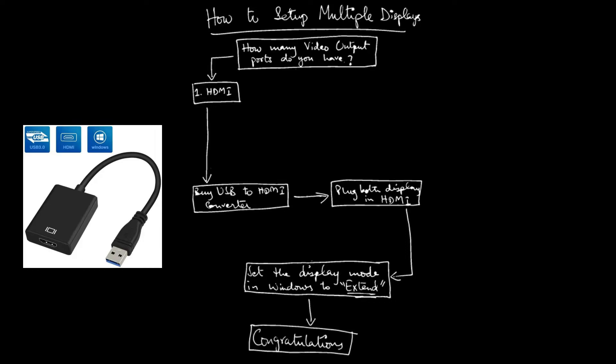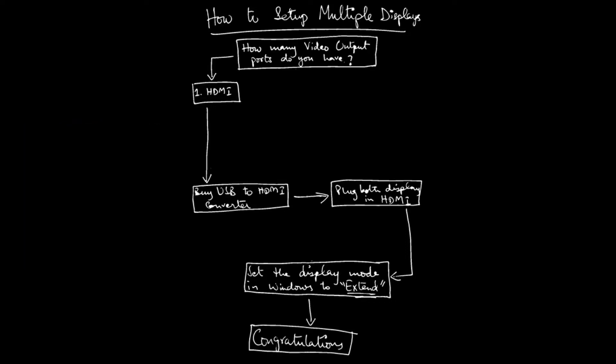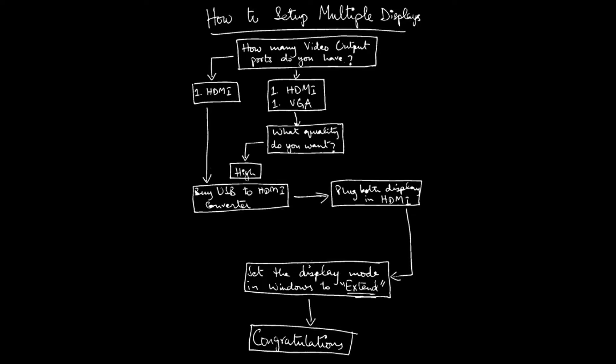If you have one HDMI and one VGA video output port on your laptop or PC, then you have another option. If you need high quality output, repeat the first step — use a USB-to-HDMI converter so that both external displays use HDMI connections.